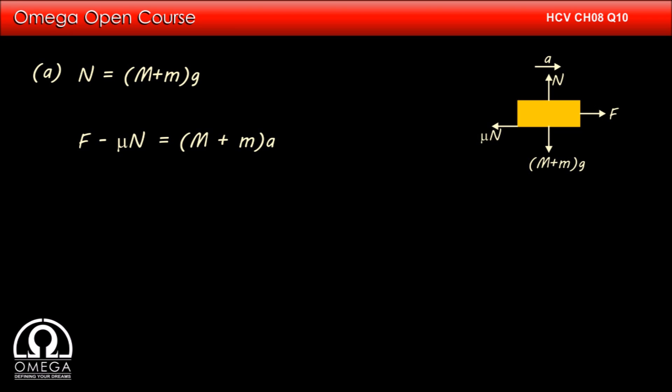Therefore, F minus mu N is equal to capital M plus m into A. Putting the value of N and A, we get F minus mu into capital M plus m into G is equal to capital M plus m into F by 2 into capital M plus m.